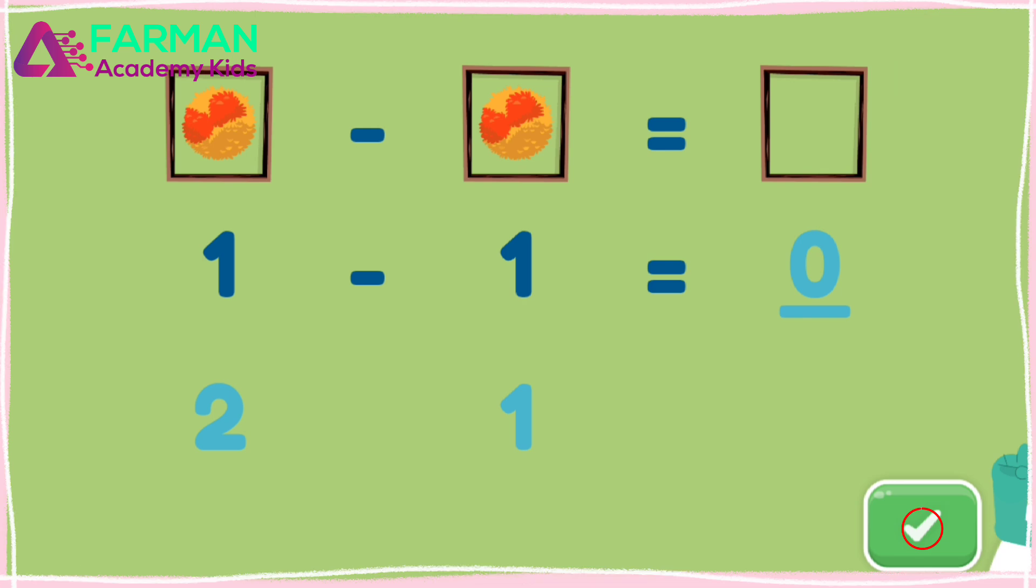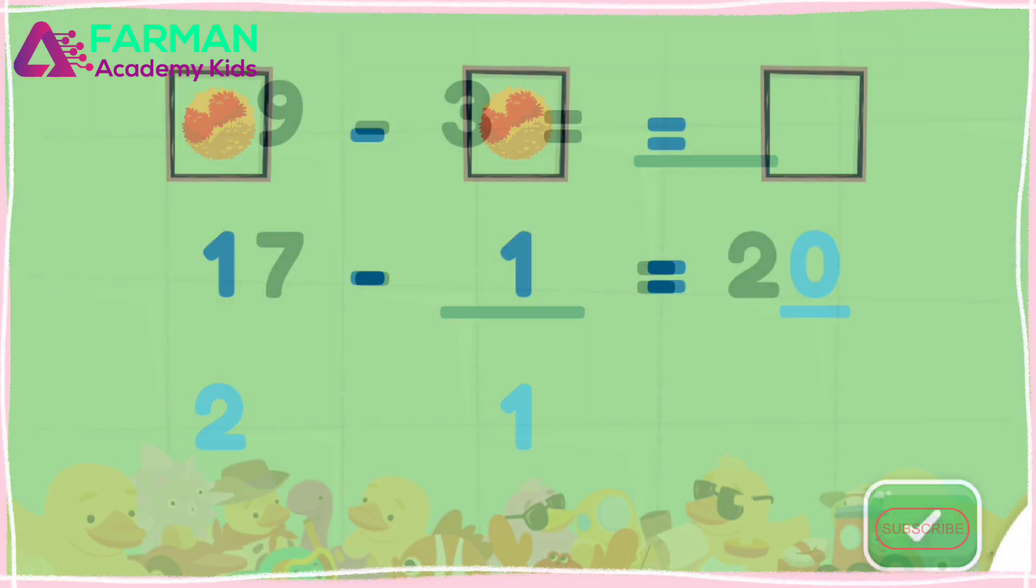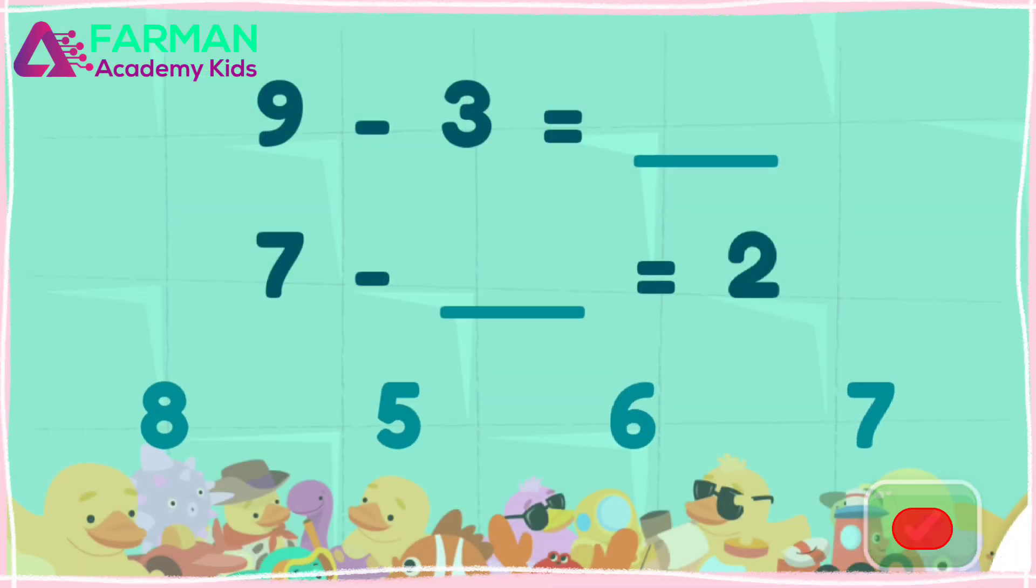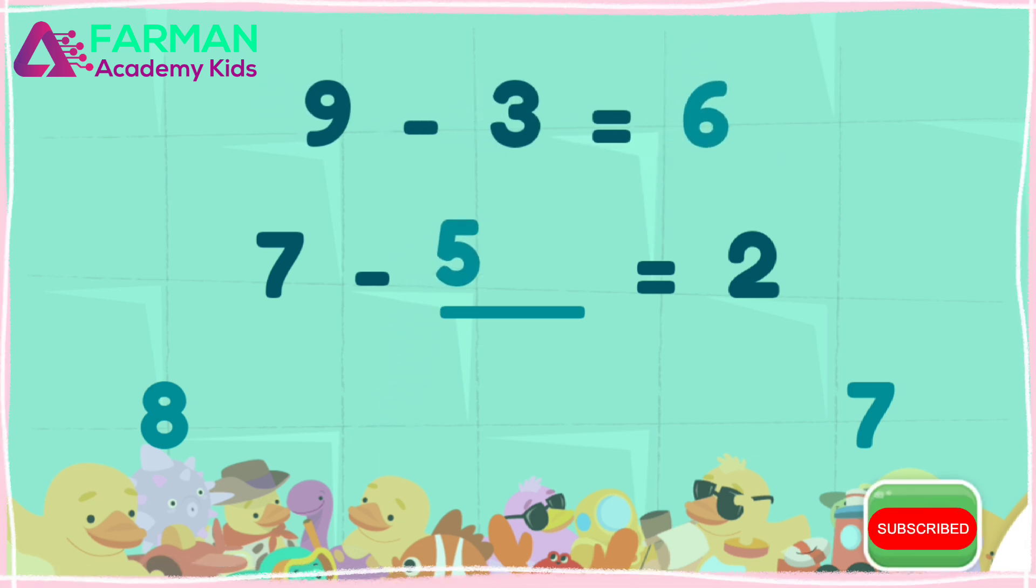A number minus itself equals zero. Solve the equation. Great job! One minus one is zero.